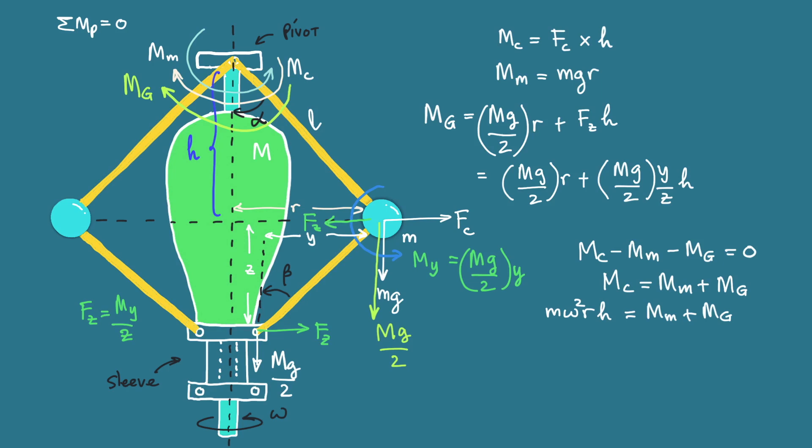If we rearrange these equations to obtain H, then H will be g over omega squared multiplied by 1 plus M capital over 2m multiplied by 1 plus YH over ZR. This YH over ZR is not so nice to see in the equations.